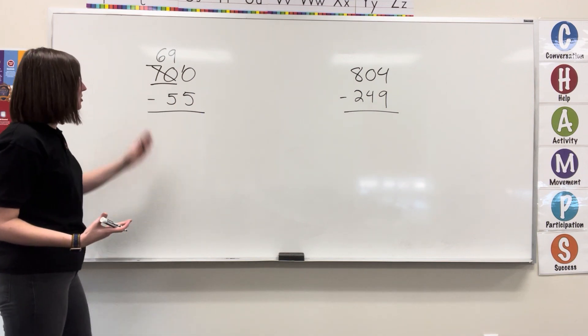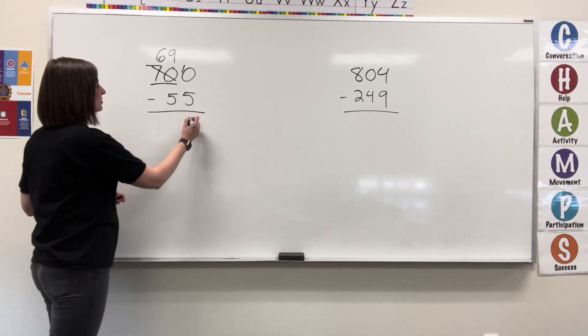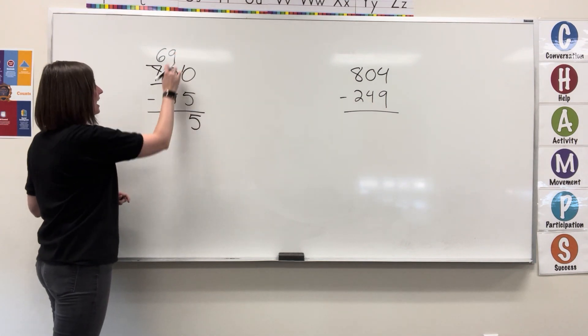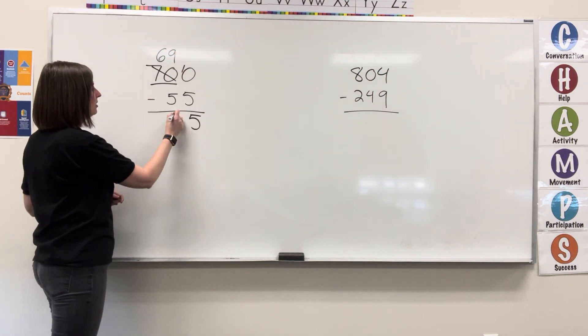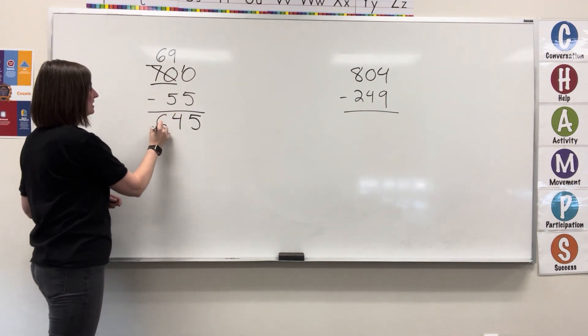We're going to start borrowing now that we have all of our numbers changed. 10 minus 5 equals 5. Write the 5. 9 minus 5 equals 4. Write the 4. 6 minus nothing equals 6. Write the 6.